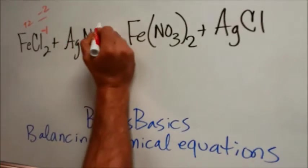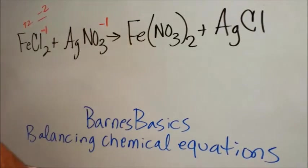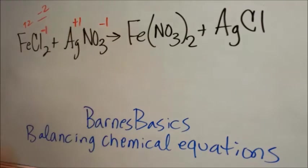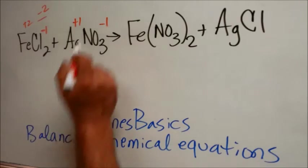Nitrate is a polyatomic ion and it has a charge of minus 1. And silver is almost always plus 1. It's just one of those to kind of memorize. So that's neutral.